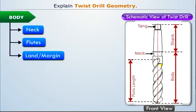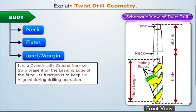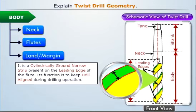Now let us focus on the leading edge of the flute. We see that there exists a cylindrically ground narrow strip. This is called land or margin. Its function is to keep the drill aligned during drilling operation.